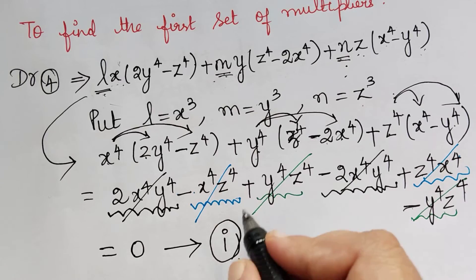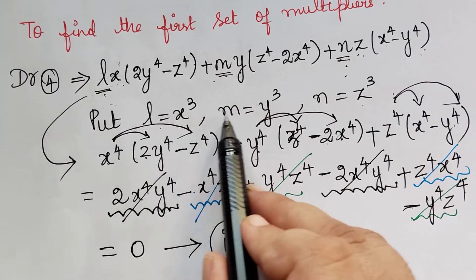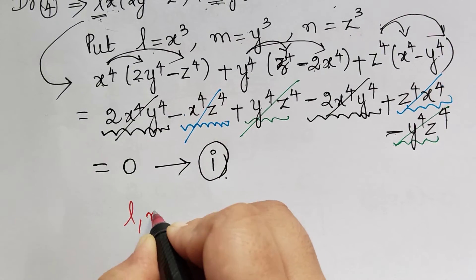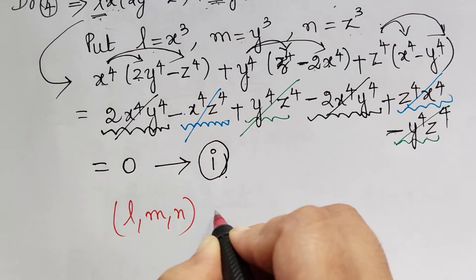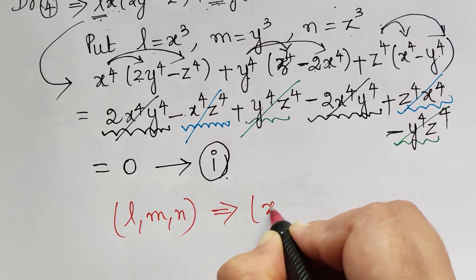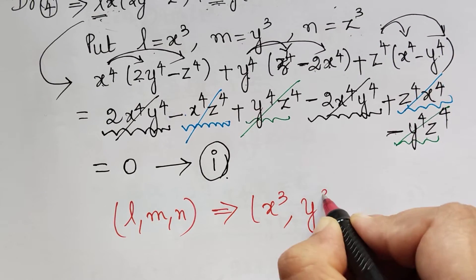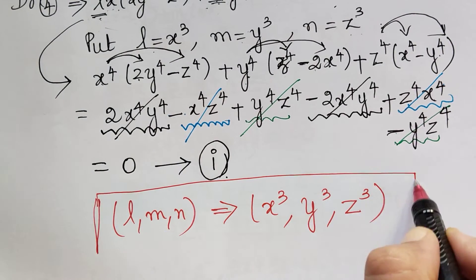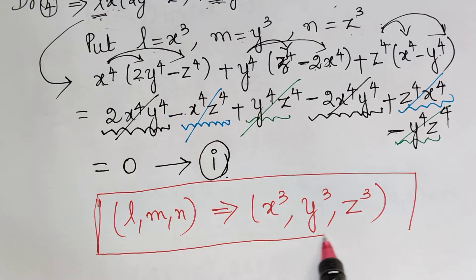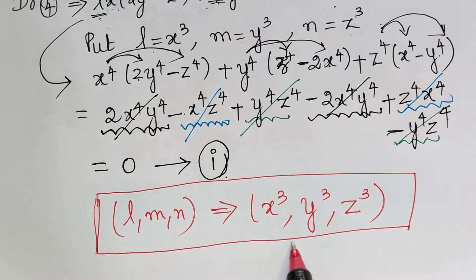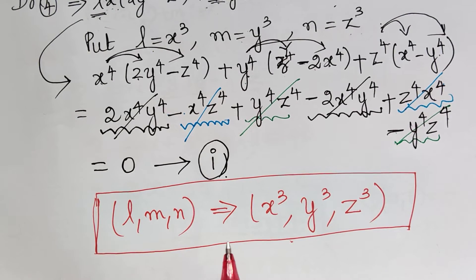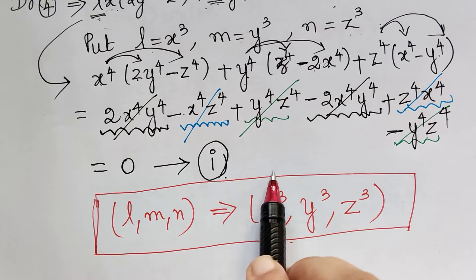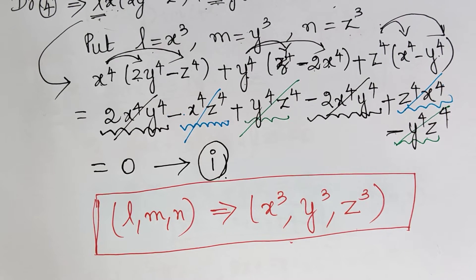Therefore, the first set of multipliers is x³, y³, and z³. We choose L, M, and N as x³, y³, and z³ in order to make the denominator 0. We have obtained the first set of multipliers, which will give us the first solution U. Similarly, we have to find a second set of multipliers — different from these — in order to find the solution V.